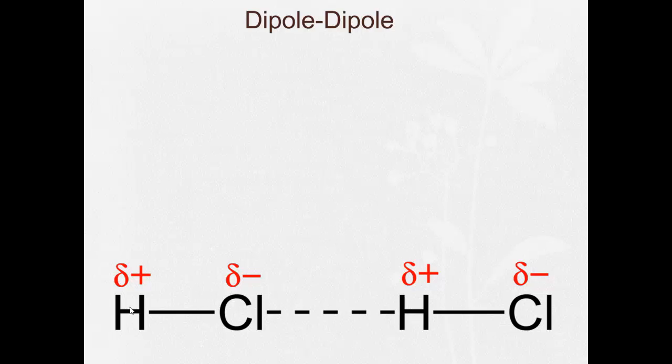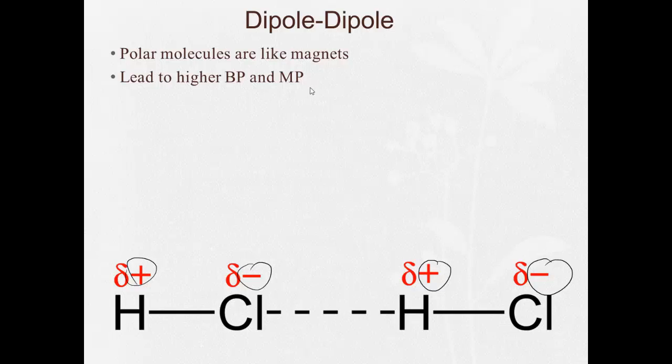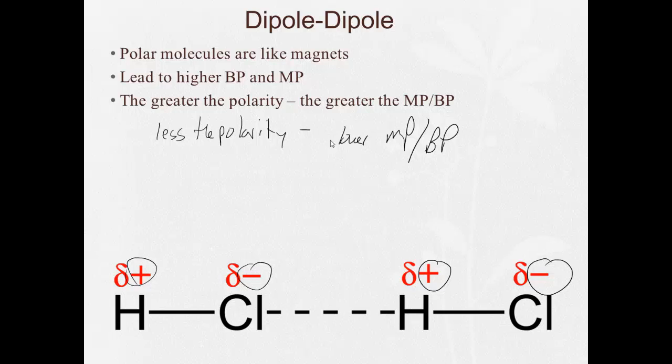Next is dipole-dipole bond. So here, let's look at hydrogen chloride, where the hydrogen end tends to be positive, the chlorine end tends to be negative. Here's another one, the hydrogen end tends to be positive, the chlorine end tends to be negative, and they're attracted towards one another, once again, like magnets. So polar molecules are like magnets. The more electronegativity difference, the stronger the magnet, and that'll lead to a higher boiling point and melting point. The greater the polarity, the greater the melting point and boiling point. The less the polarity, the lower the melting point and boiling point. They're directly related to one another.